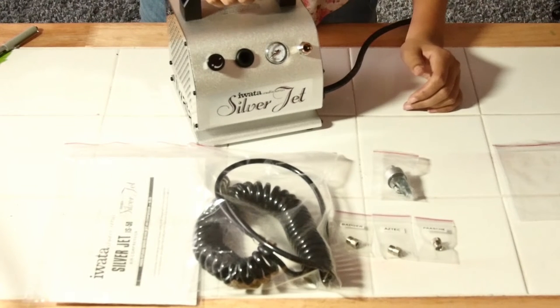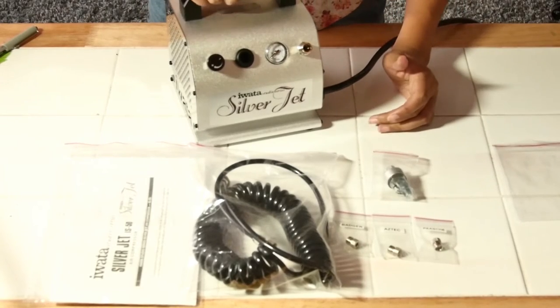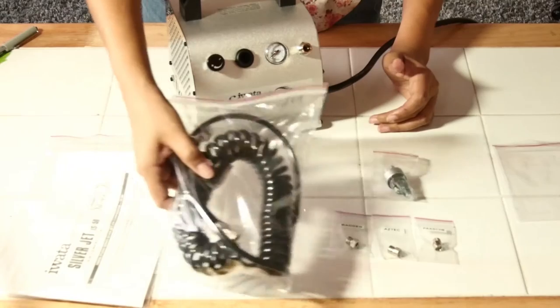So I just got the Iwata Silverjet Compressor and this is everything it comes with. It comes with an instruction manual and a hose.